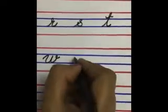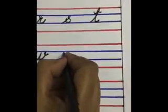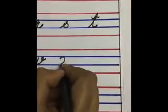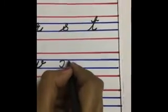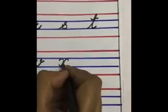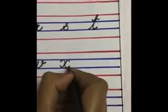Now from the second line, you are starting and again ending in the third line. This is small letter X.